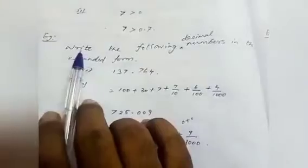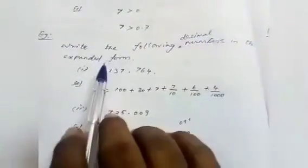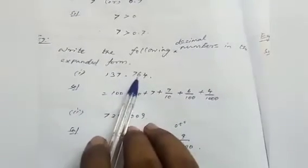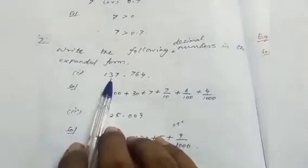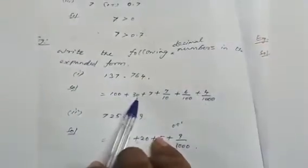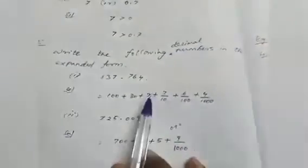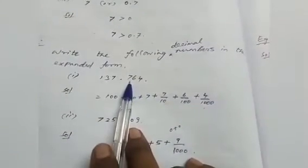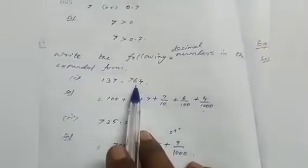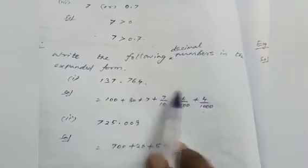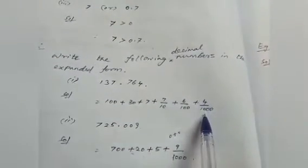Write the following decimal numbers in expanded form. First: 137.764. The place value of 1 is 100, so 1 × 100 = 100. Place value of 3 is 10, so 3 × 10 = 30. Place value of 7 is 1, so 7 × 1 = 7. Place value of 7 (tenths) is 7/10. Place value of 6 is 6/100. Place value of 4 is 4/1000.